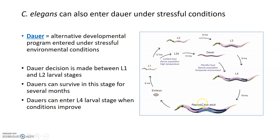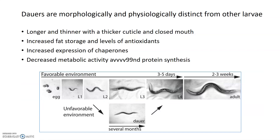Ultimately, they don't look different once they come out of dauer, but they are physiologically distinct from L2s and L3s when in that dauer state. Under favorable conditions you can see worms progressing through four larval stages and then becoming reproductive adults. At that L1 decision point, if the environment is unfavorable, they can become dauers and then exit into L4. Dauers look different — they're longer and thinner than normal larvae of the same age. They have a thicker cuticle on the outside, which is one of the things that makes them more resistant to stresses. They also close their mouth cavity and don't eat during this time, stopping grinding food in their pharynx. To withstand the non-eating period, they increase their fat storage as well as levels of antioxidants, which help prevent formation of free radicals.